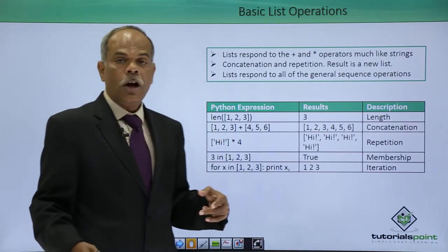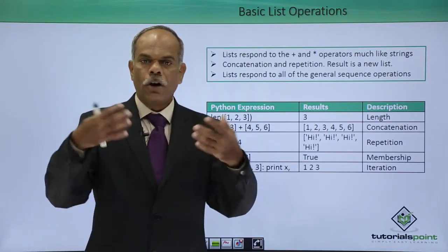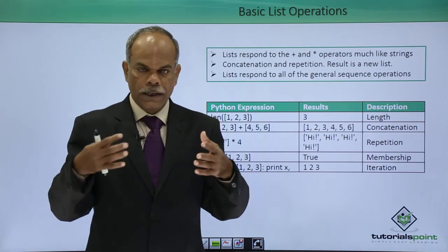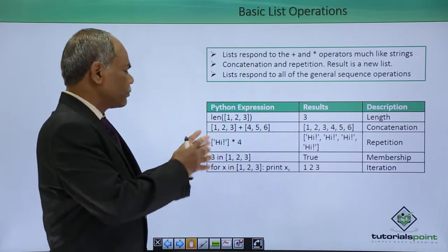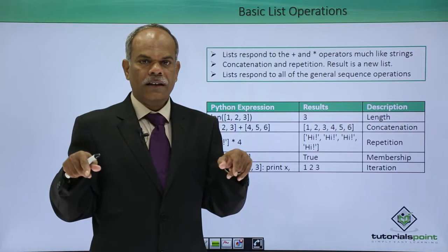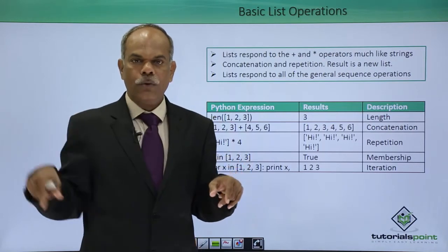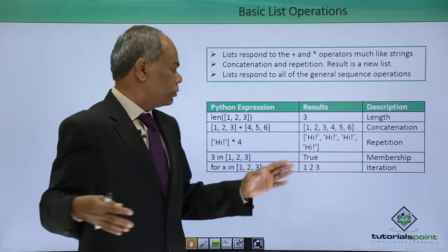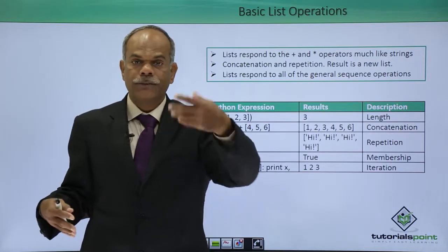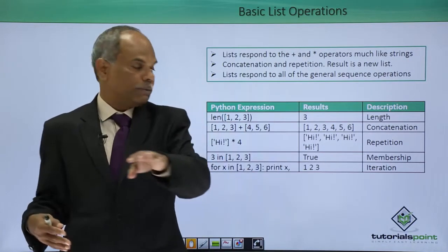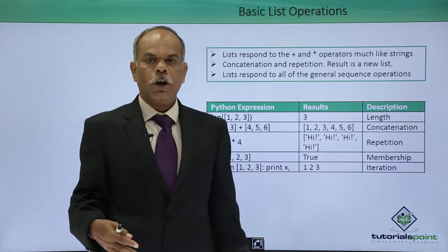Similarly, there is a repetition operation that can be performed on a list object. If I have a list with one element 'hi' and if I say 'hi' star 4, what will happen? 'Hi' will be repeated 4 times. The list that will be subsequently formed will contain 'hi' 4 times. So it is a repetition operator.